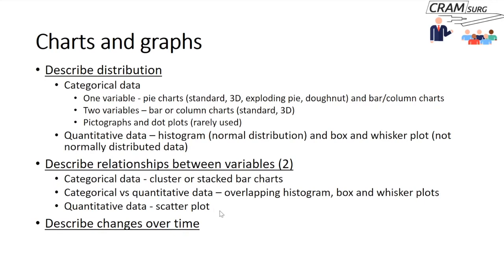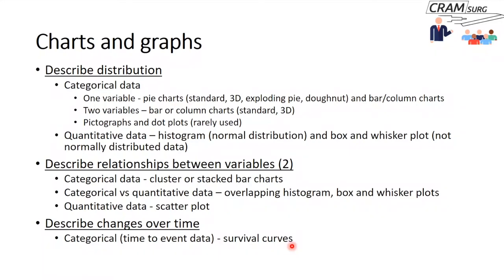If you want to describe changes over time and you're looking at an event like recurrence or death — what we call time-to-event data — we typically use survival curves. And if you have a quantitative variable you want to show changing over time, you use a line graph.